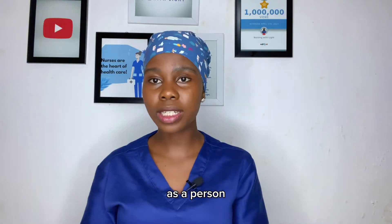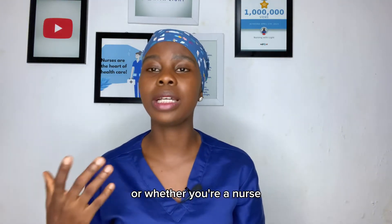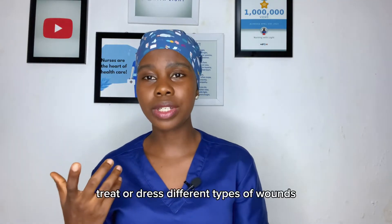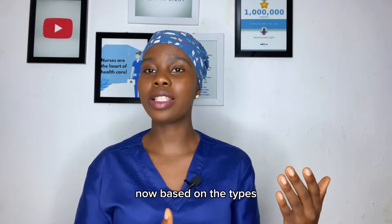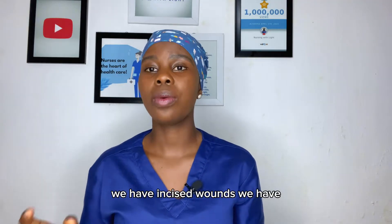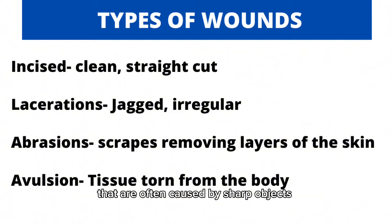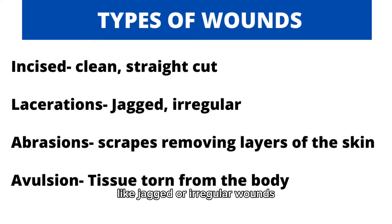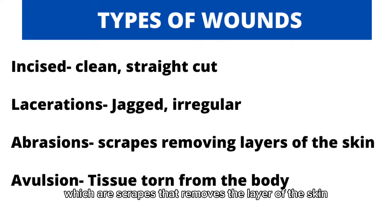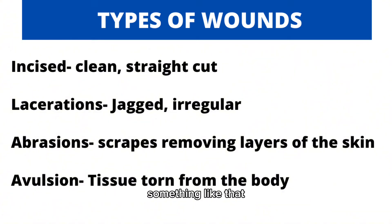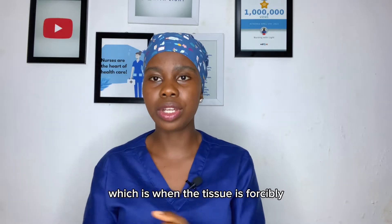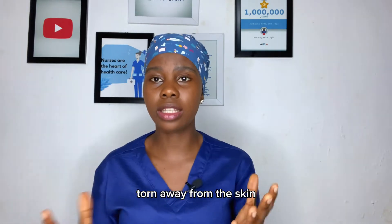There are different types of wounds you could have as a person, or that nurses may have to treat or dress. Based on the types, we have incised wounds and lacerations. Incised wounds are clean or straight cuts often caused by sharp objects, while lacerations are jagged or irregular wounds resulting from tearing of the skin. You have abrasions, which are scrapes that remove a layer of skin, and avulsions, where tissue is forcibly torn away from the body.